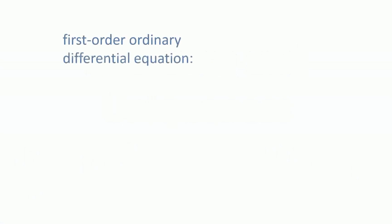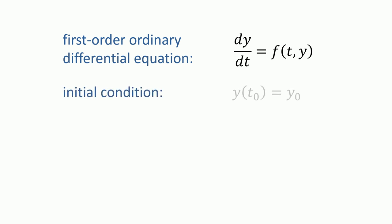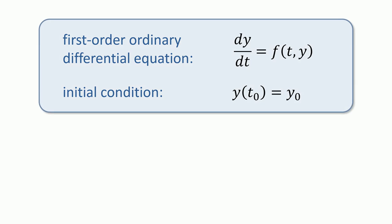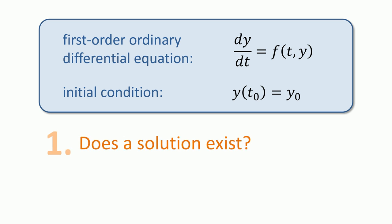Consider the first-order ordinary differential equation dy/dt equals f, with initial condition y equals y0. Before we try to find a solution, we should answer two questions. First, does a solution exist? We would like to know that this initial value problem is actually solvable before we work too hard to find a solution.